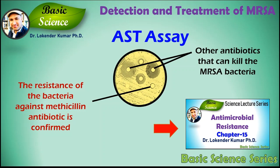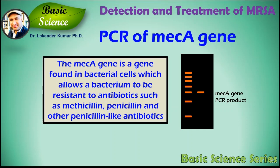Another method to detect MRSA infection is PCR of the mecA gene. PCR, or polymerase chain reaction, is a technique used in molecular biology that can detect and identify bacteria by their DNA. If you have the facility, you can directly do PCR of your sample and look for the mecA gene. The mecA gene is found in bacterial cells and allows the bacterium to be resistant to antibiotics such as methicillin, penicillin, and other penicillin-like antibiotics.